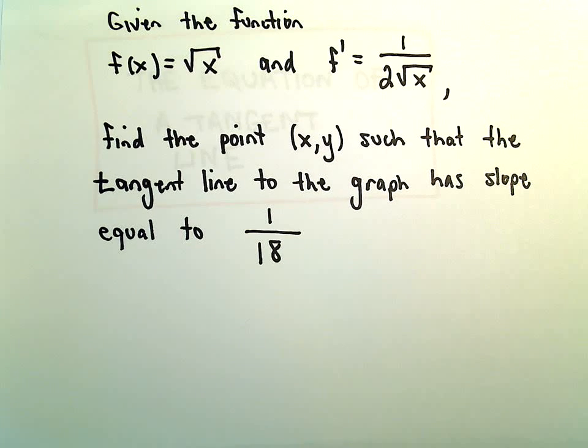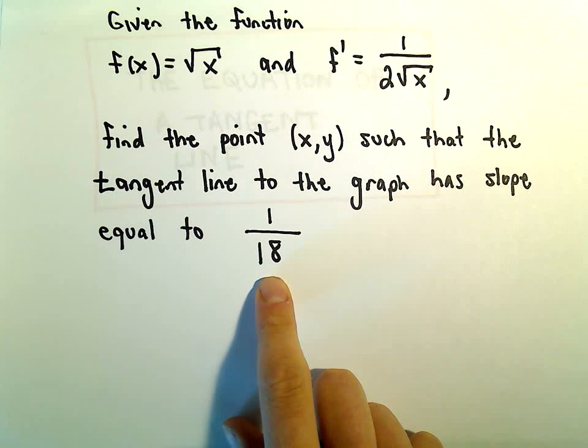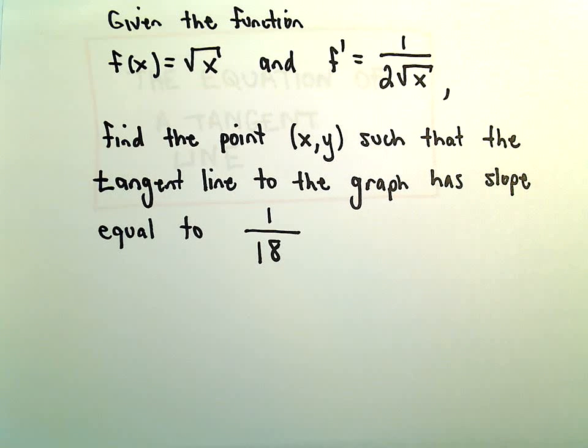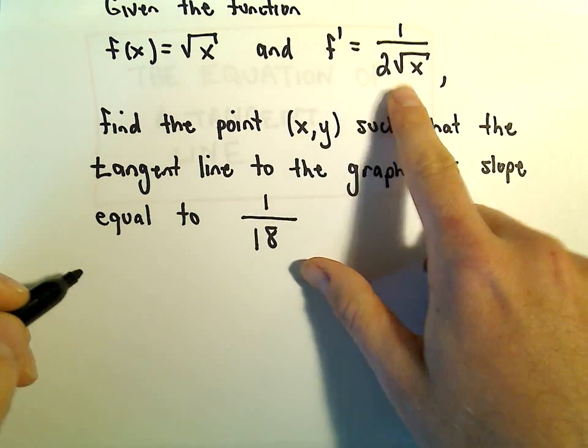So we're trying to figure out where on the original graph the tangent line would have some particular slope. To do this, it's easy, in a sense, once you have the derivative. Because the derivative basically tells you a formula for the slope of the tangent line.